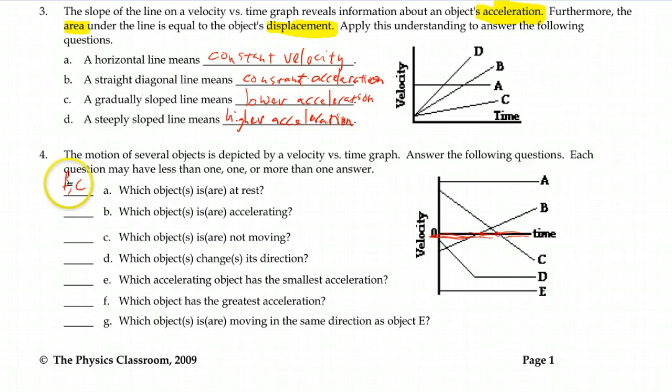To have acceleration, a non-zero acceleration, we should have some kind of slope. At any point in the graph, it's not a flat line. So that means B, C, D, they all have sections where there is a slope, either positive or negative.